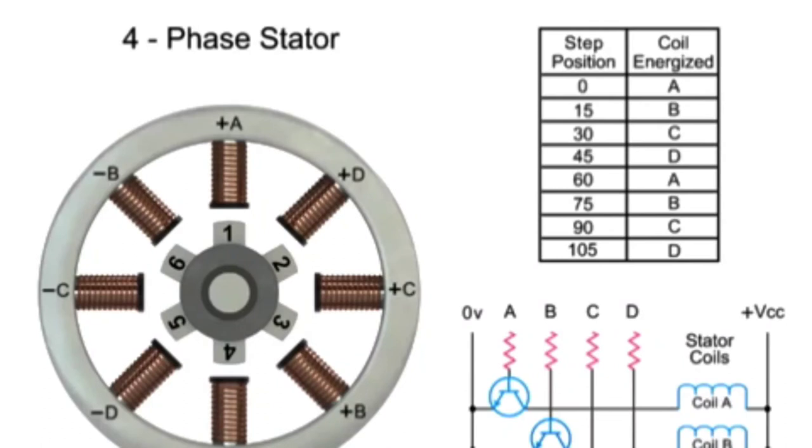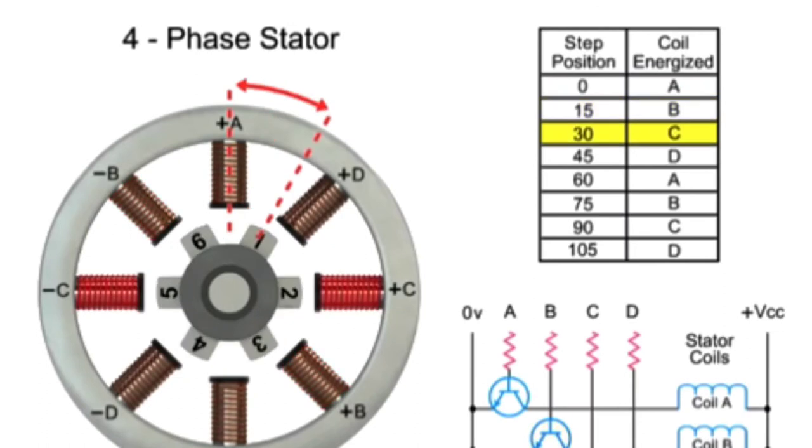For full-step mode operation, energizing each set of coils sequentially, the rotor can be made to rotate or step from one position to the next by an angle determined by its step angle. Shaft rotation is achieved by energizing both windings while reversing the current alternately. Switching coils A, B, C, D, one coil at a time repetitively, will rotate the rotor in the forward direction.